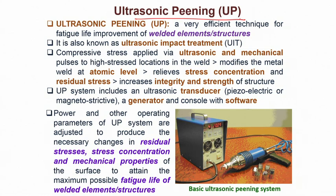Ultrasonic peening, or UP, is a process where we again have the same intention of improving the fatigue life, particularly for welded elements or structures in a narrow zone — not necessarily for very large surface areas — by using ultrasonic waves as the means of directing certain solid objects onto the surface of the particular region where we want to develop compressive stress.